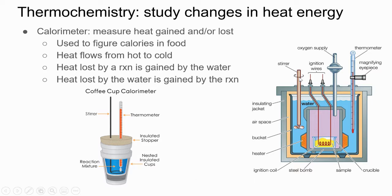It's usually done using what we call a bomb calorimeter, which is shown in this picture. You have your food in there, it gets ignited so it burns, and then the temperature of the water changes. Heat lost by a reaction is gained by the water in the same amount, and heat lost by water is gained by the reaction if it was endothermic.